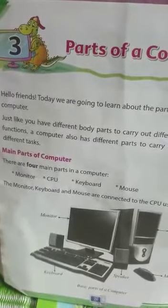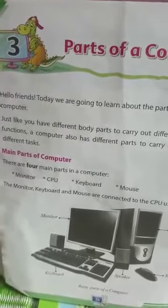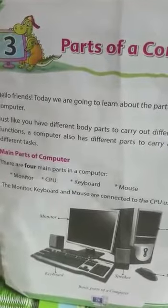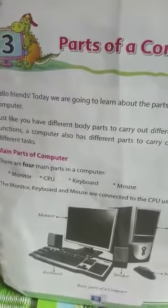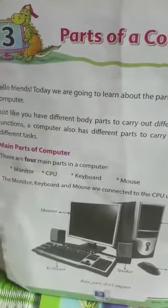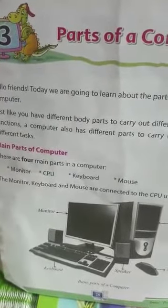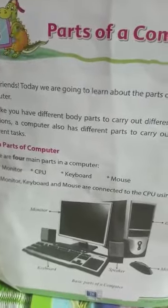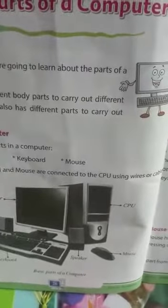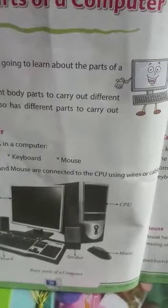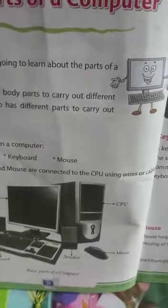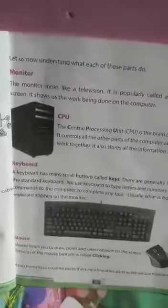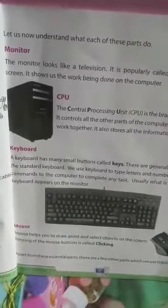There are four main parts of a computer: number one is monitor, CPU, keyboard, and mouse. The monitor, keyboard, and the mouse are connected to the CPU using wires or cables. Let us now understand what each of these parts does.